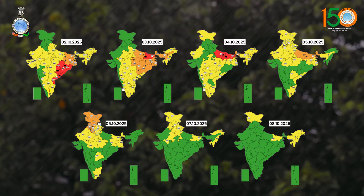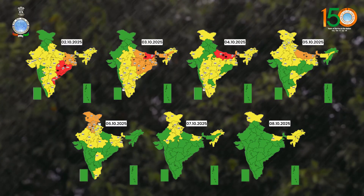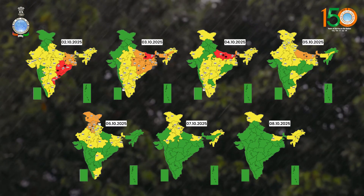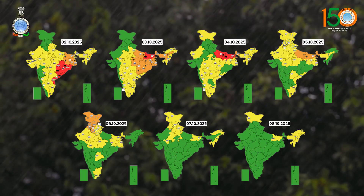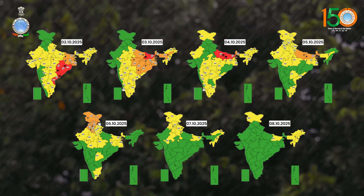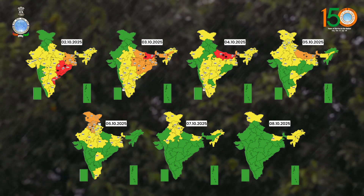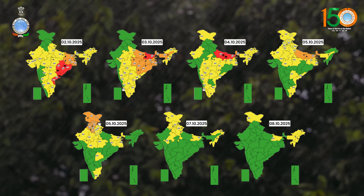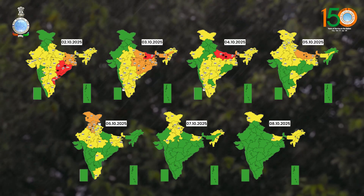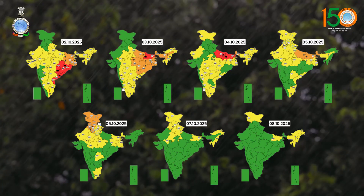For day 3, 4th October, red warnings are issued for Bihar and East Uttar Pradesh where extremely heavy rainfall is expected at one or two places. On the 5th, rainfall intensity is going to come down but orange warnings are issued over Bihar and East Uttar Pradesh for heavy to very heavy rainfall. From 5th October onward, as mentioned, the western disturbance is likely to affect the western Himalayan region.